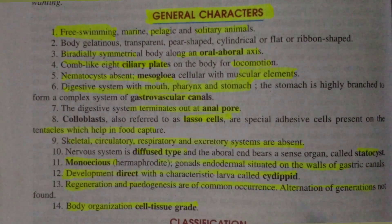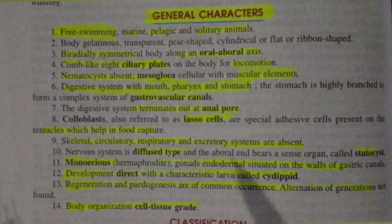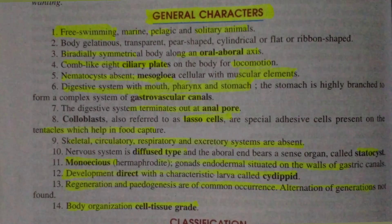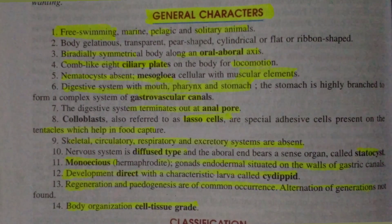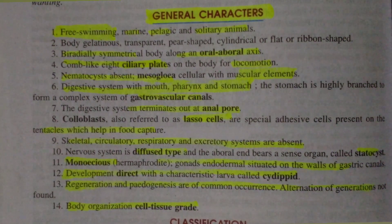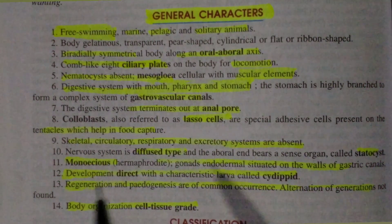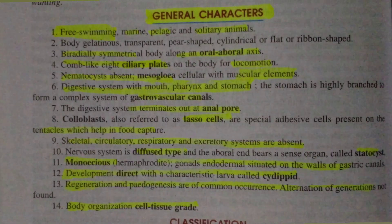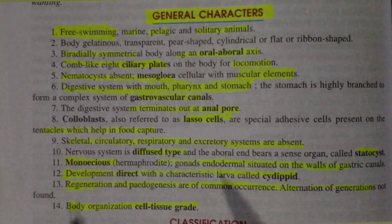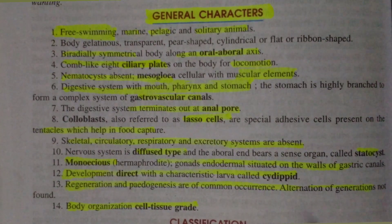Nematocysts are absent (nematocysts — stinging cells — are not present). Mesoglia is cellular — the mesoglia is the intermediate layer found between the ectoderm and endoderm. The mesoglia is cellular, meaning it forms a layer with muscular elements.